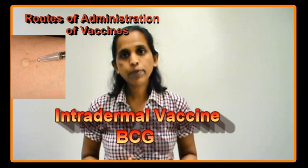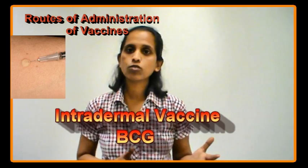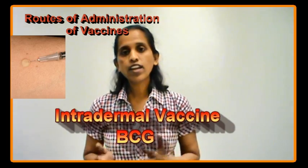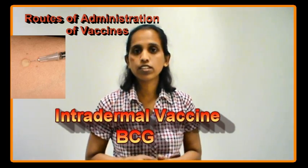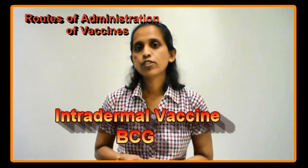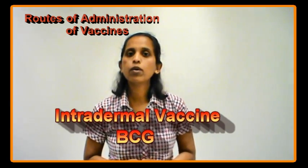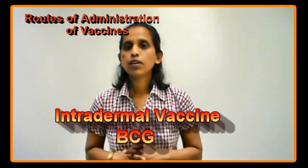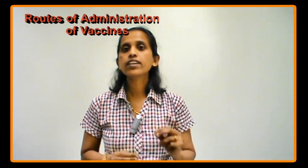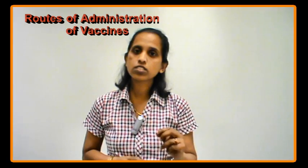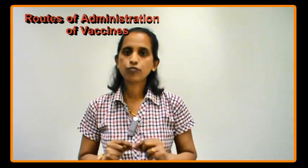If the BCG vaccine is incorrectly administered, instead of providing protection against childhood tuberculosis, the child may develop neurological complications that are quite serious and worrying for parents. This is why the route of administration is very critical in immunization.